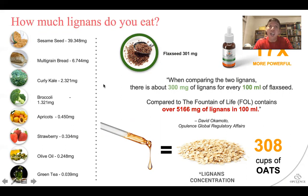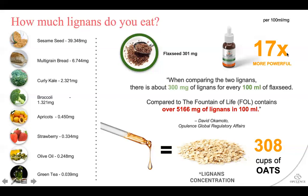Comparing Fountain of Life to flaxseed, Fountain of Life has 17 times more lignans than flaxseed. There are about 300 milligrams of lignans per 100 milliliters of flaxseed, while Fountain of Life contains 5,166 milligrams of lignans for the same amount of content. So it's the most powerful and most natural lignan you can get in the whole world. One full dropper of Fountain of Life — about 40 drops — has roughly 50 milligrams of lignans.